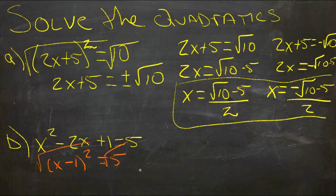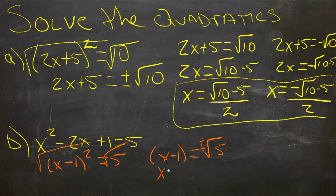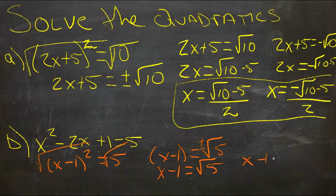Then we can take the square root of both sides, and we'll get x minus 1 is the square root of 5, positive or negative. So we have our two possibilities. We have x minus 1 is the square root of 5, and x minus 1 is the negative square root of 5.